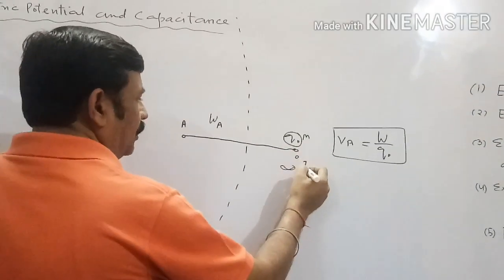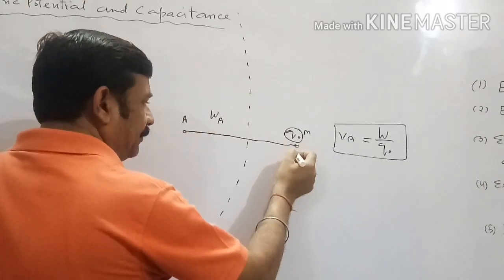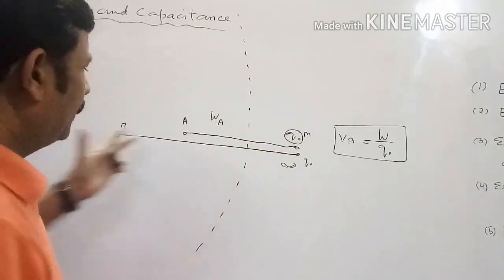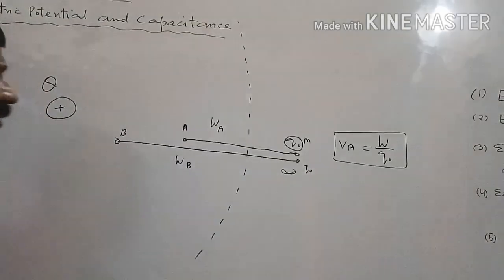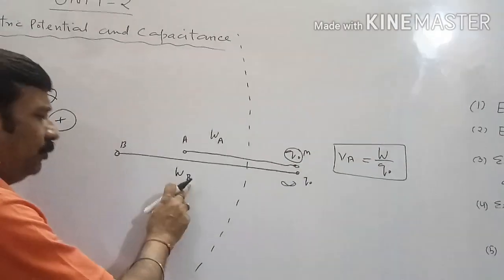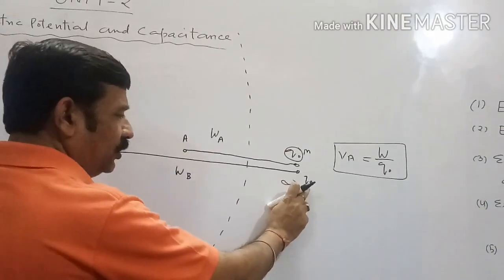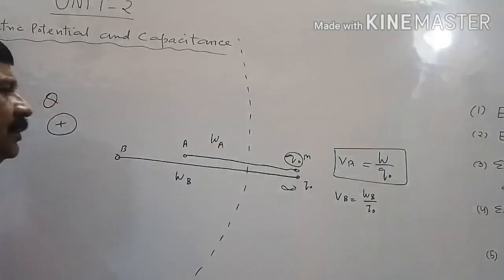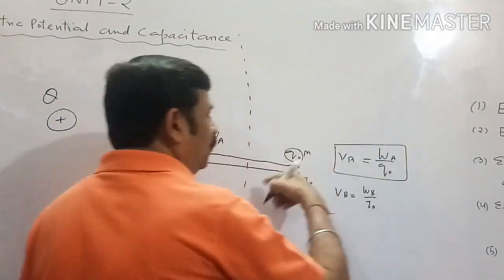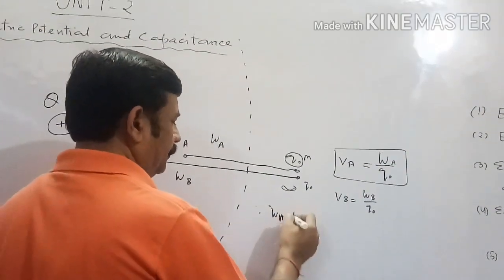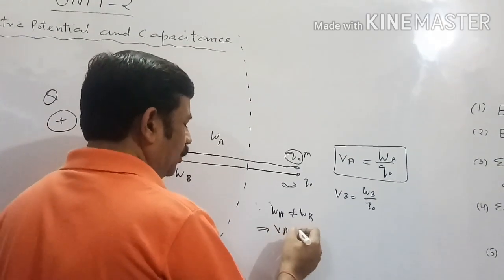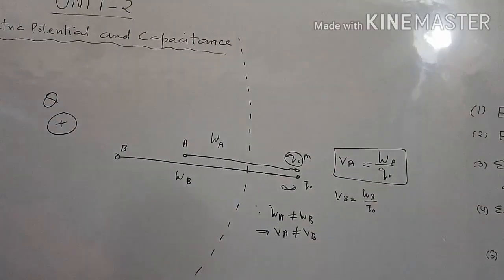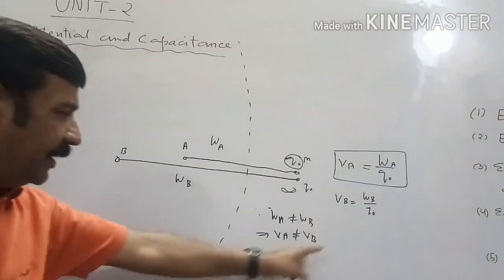Another charge body of the same magnitude and nature is kept at M and shifted up to point B. Since it is shifted to a different distance, different work will be done — let that work be W_B. So if W_B work is done to move the charge body of charge Q₀ from infinity to B, then the potential at B will be W_B by Q₀. Since W_A and W_B are not equal, it means the potential at A and the potential at B are also not equal, meaning different points inside the electric field region have different values of electric potential.